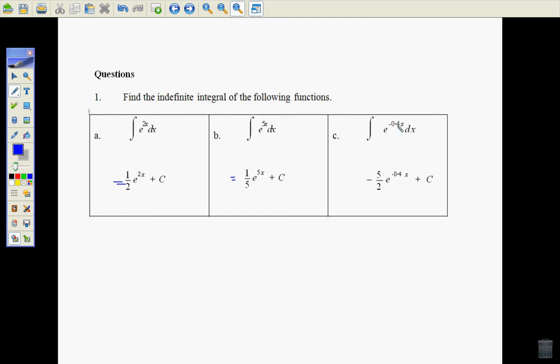e to the power of minus 0.4, well that gives us the 1 over minus 0.4, which works out to be 2 and a half or 5 over 2.